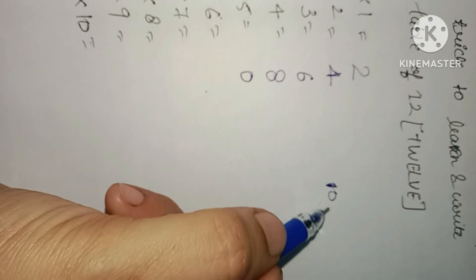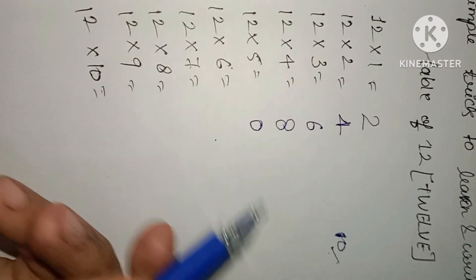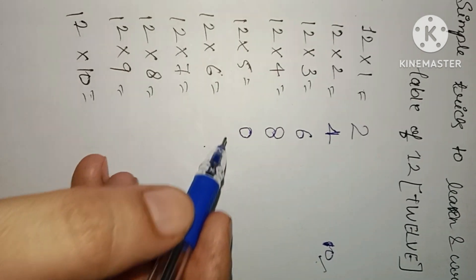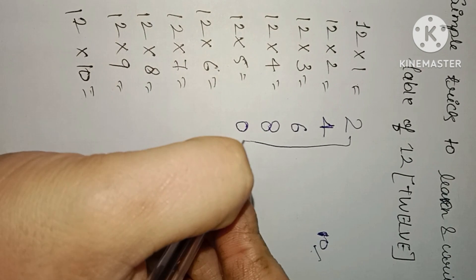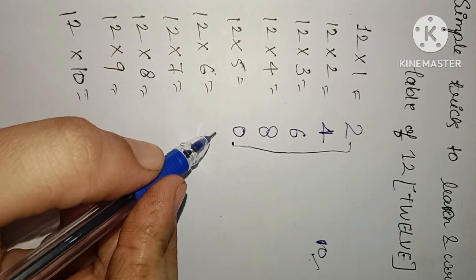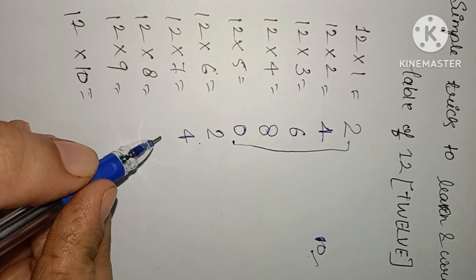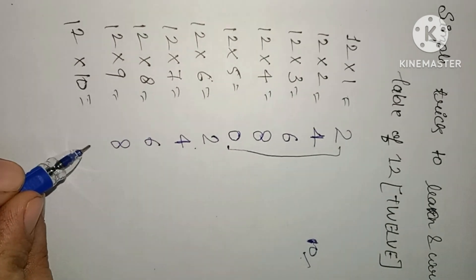Only we have to put zero. Now you can see, two fives are 10. You have to write it. Only you have to learn 2, 4, 6, 8, 10 and you have to remove the 1. This same pattern you have to follow down also. Same: you write 2, 4, 6, 8, 0.